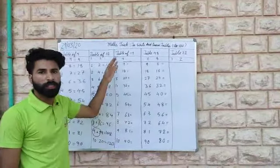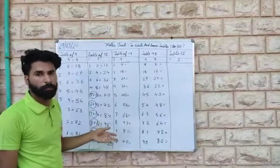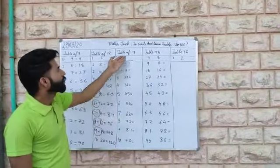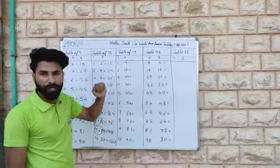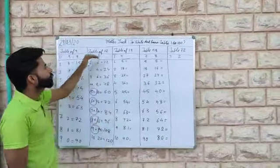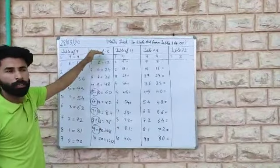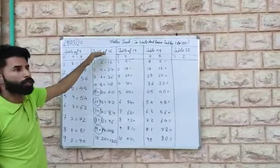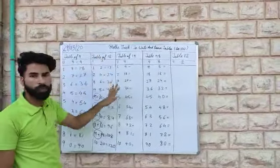One more example of two-digit numbers table. Let us try the table of 19. The same process what we have followed in table of 12, the same we can use here.